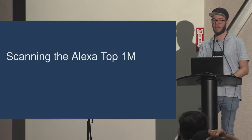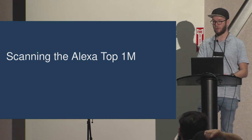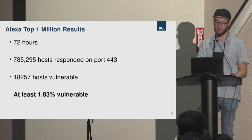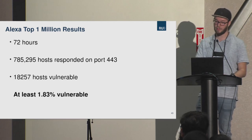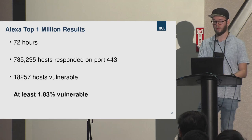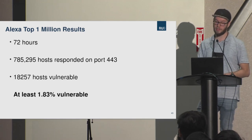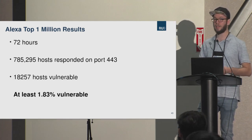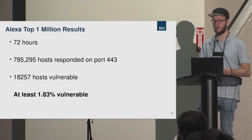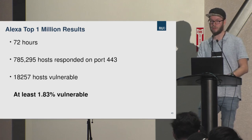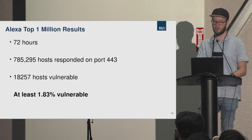Scanning the Alexa top 1 million with all cipher suites, two version sets, and four messages took roughly 72 hours including rescanning. About 78% of servers responded on port 443, willing to speak TLS. From those, at least 1.83% are considered vulnerable — they responded identically across three rescans and were vulnerable in exactly the same way each time. This is quite significant for a 17-year-old vulnerability in 2018/2019.